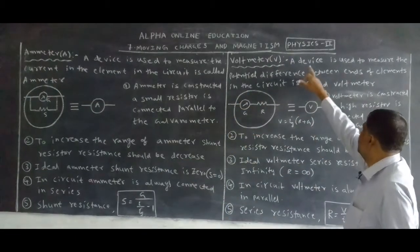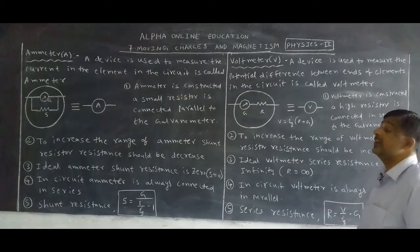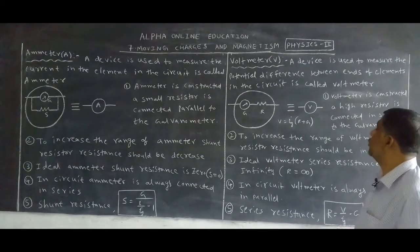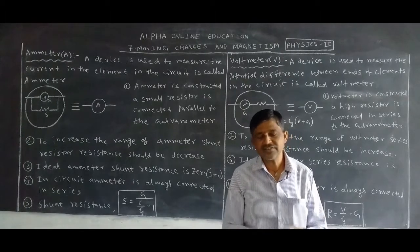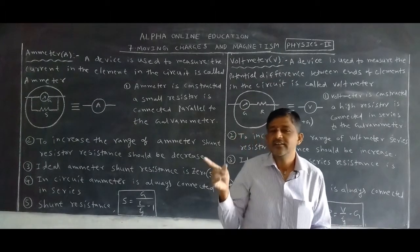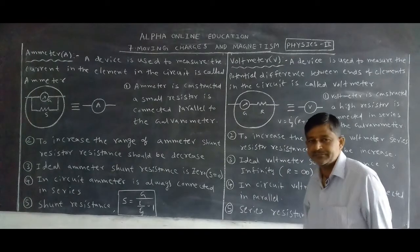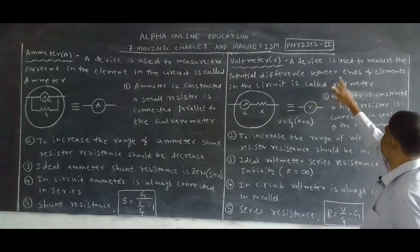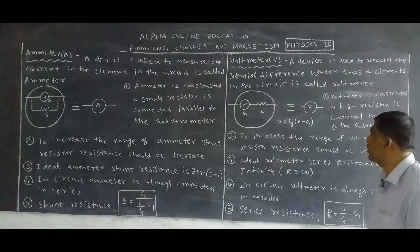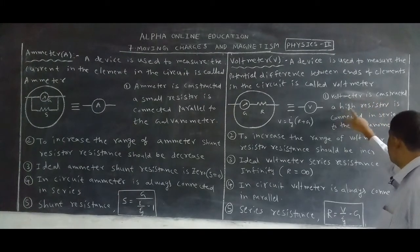Next, voltmeter. A device used to measure the potential difference between the ends of elements in the circuit is called a voltmeter. Elements include resistors, inductors, batteries, etc. We want to find the potential difference between the ends of elements in the circuit — voltmeter is used. Voltmeter is designed by connecting a high resistor in series to the galvanometer.